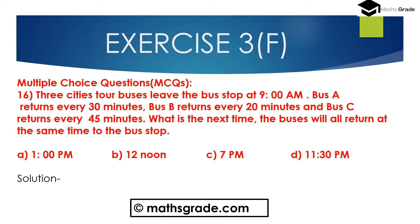Now question number 16: Multiple Choice Questions. Three city tour buses leave the bus stop at 9 AM. Bus A returns every 30 minutes, Bus B returns every 20 minutes, and Bus C returns every 45 minutes. First find out the LCM — the Least Common Multiple — of 30, 20 and 45 minutes.